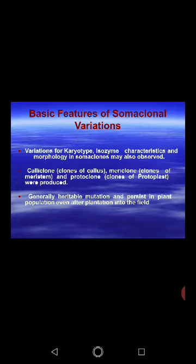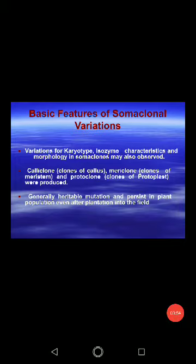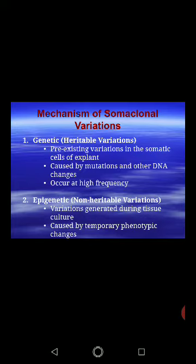Generally, somaclonal variations are heritable mutations and persist in plant populations even after their plantation in the field. This clearly suggests that these variations pass to the next generation and persist inside a plant. They are not absent in the next generation — they are passed on. This is why their study is important, because once we supply those plants to farmers, these variations are going to affect the quality of that particular plant.